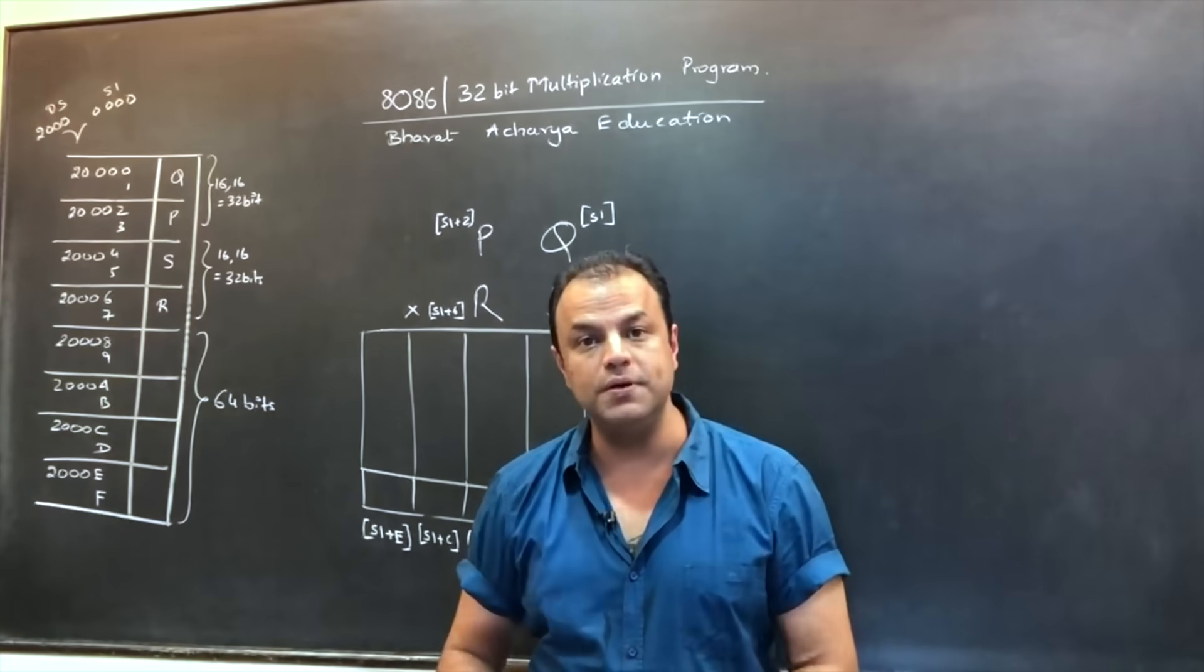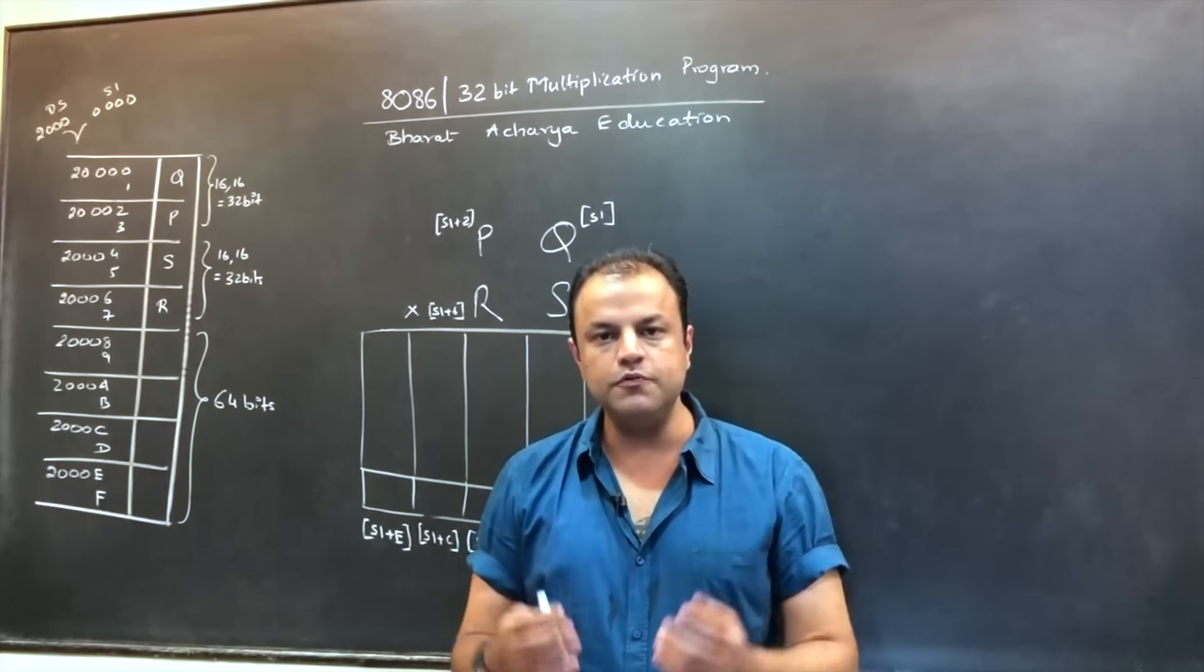And here, you want to multiply 32-bit numbers. So there's no direct way of doing it. You have to do it by a procedure.